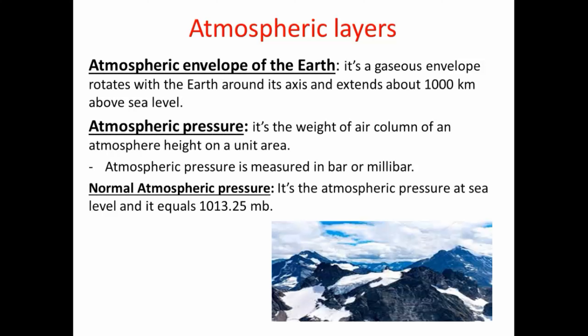But what are the atmospheric layers and what is the importance of each layer? The atmospheric envelope of the Earth is a gaseous envelope that rotates with the Earth around its axis and extends about one thousand kilometers above sea level. Atmospheric pressure is the weight of an air column of atmosphere height on a unit area.